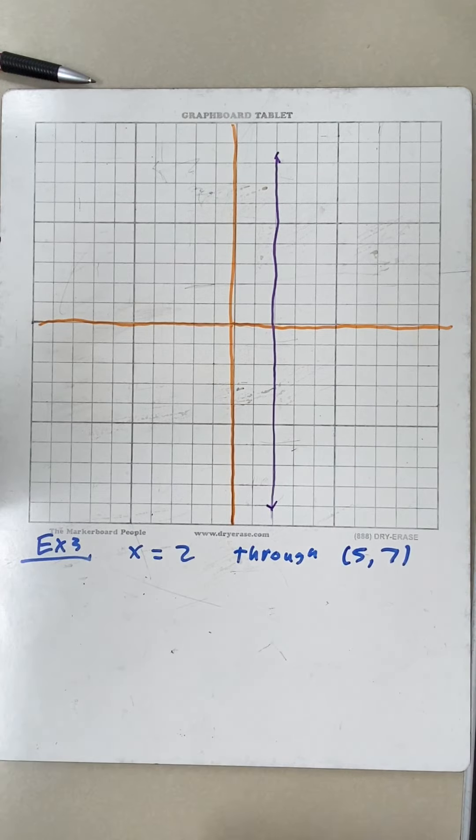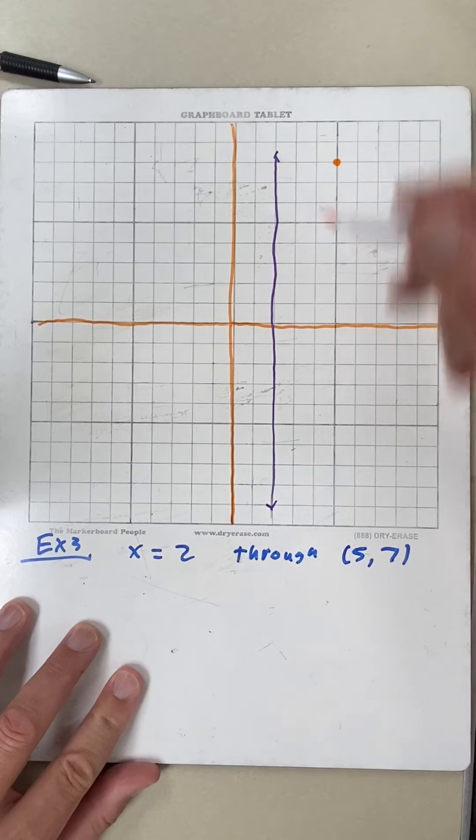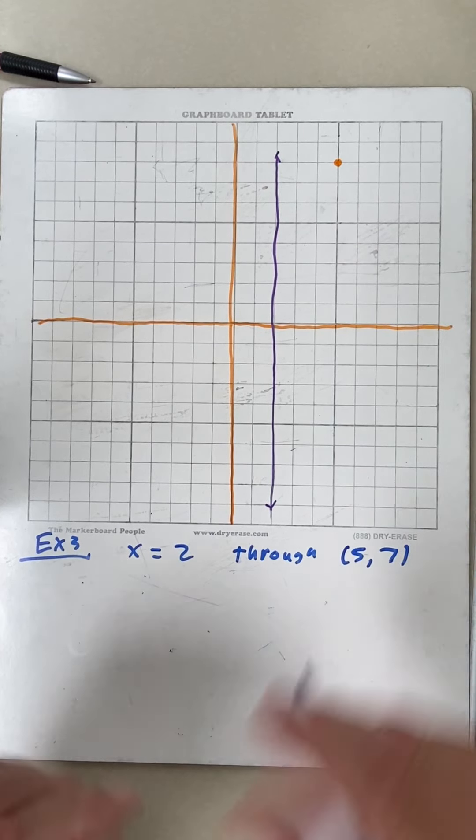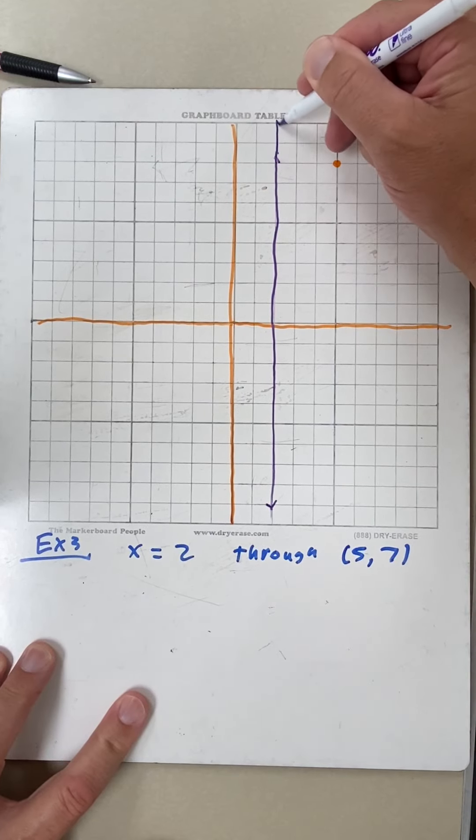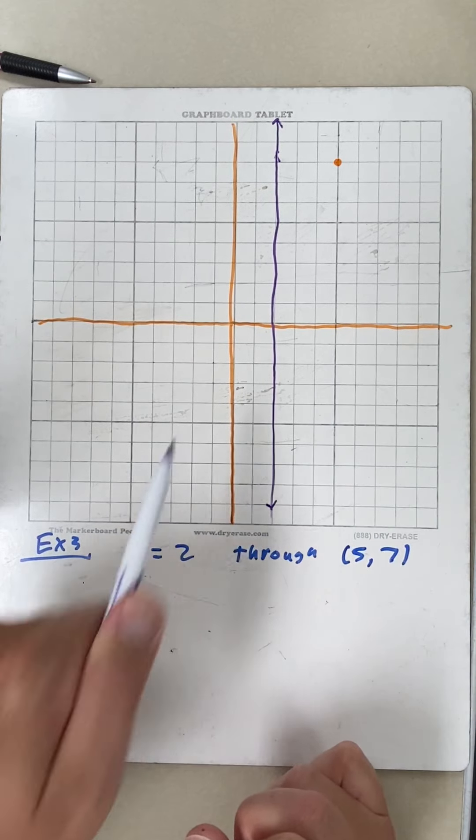All right, then I'm going to graph the point 5, 7. 5 right, 7 up. All right, I want the line that's perpendicular. So what is perpendicular to vertical? Horizontal line.